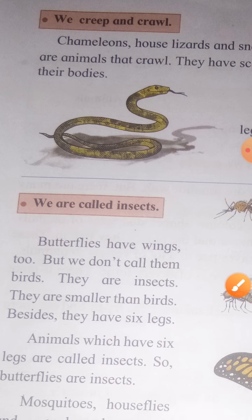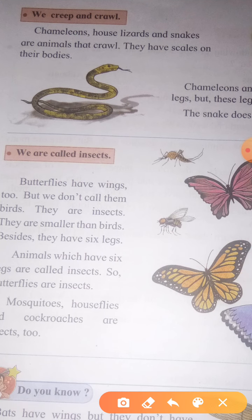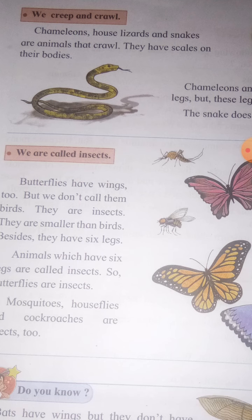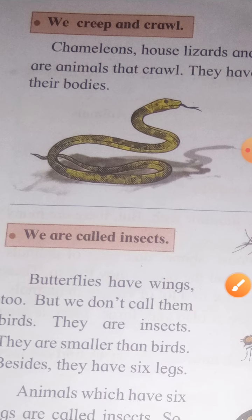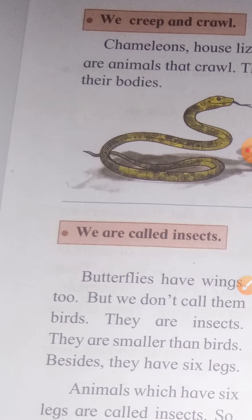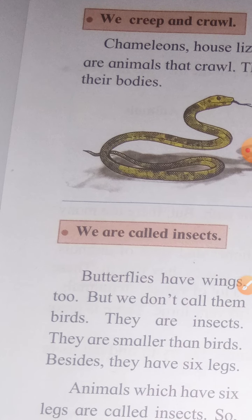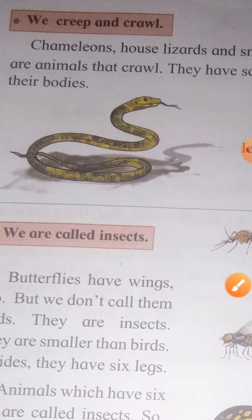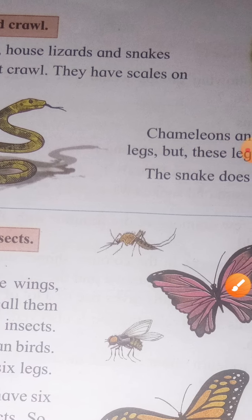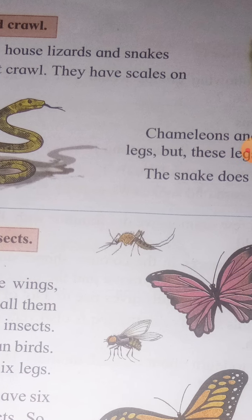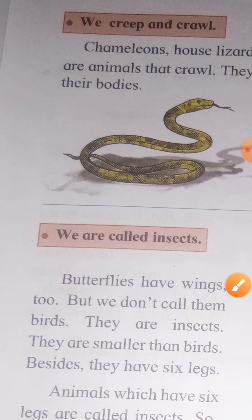So, what are these animals? Chameleon, house lizard, and snakes are the animals that crawl. Remember, 2nd standard students — chameleon means 'Girgit,' which is the animal that changes its color. Chameleon, house lizard, and snakes are the animals that crawl on the ground or on the walls.